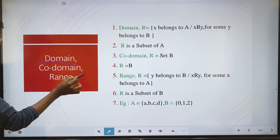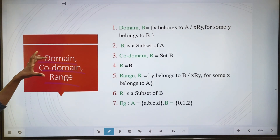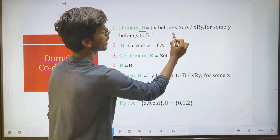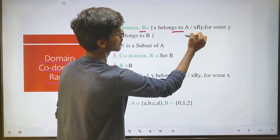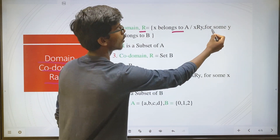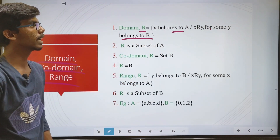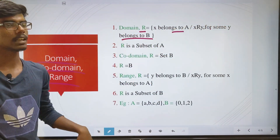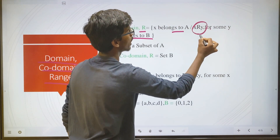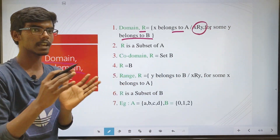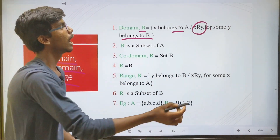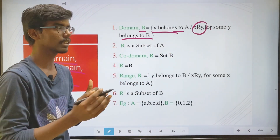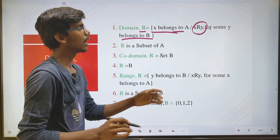Next topic: domain, codomain, and range. The domain of R is equal to: x belongs to set A such that x is related to y, for some y belonging to set B. That is, the set of all first elements x in A that are related to some element in B through the relation R. The domain is a set.